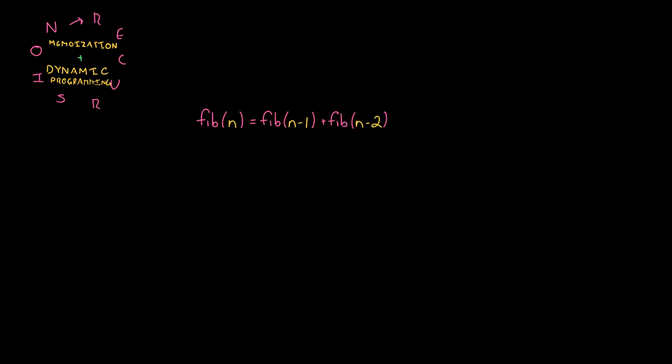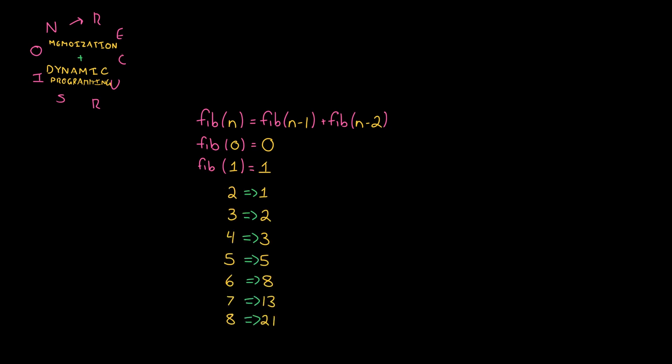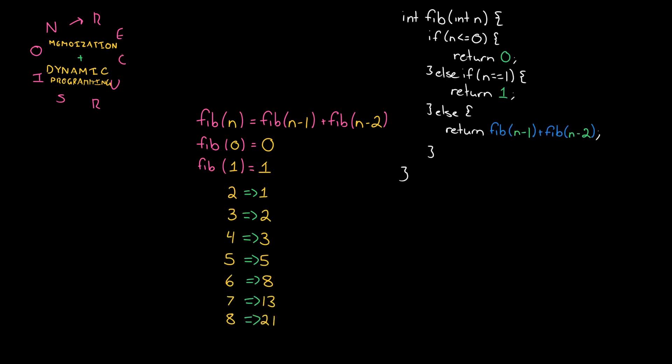Fibonacci is pretty much the classic recursive example. Fib of n is the sum of Fib of n minus 1 plus Fib of n minus 2. And then we need some starting conditions like Fib of 0 is 0 and Fib of 1 is 1. We can very easily write out the first few cases here. Translating this into code is very straightforward as well.